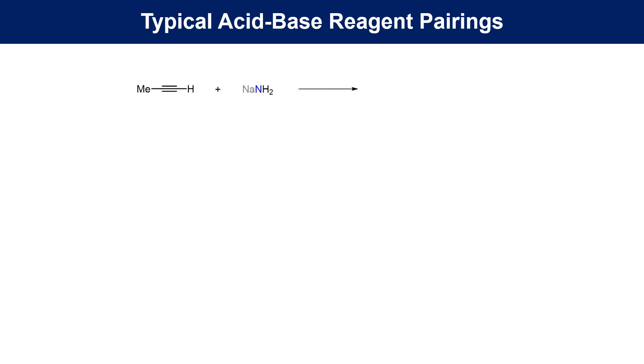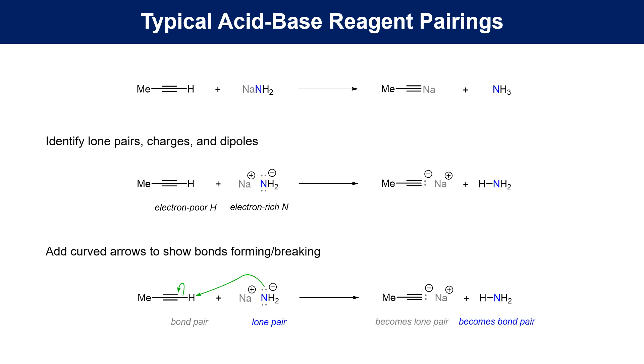In this third example, a terminal alkyne is treated with sodium amide. The result is the sodium salt of the alkyne along with ammonia. The electron-rich center is readily identified as the anionic nitrogen atom, while the alkyne proton is known to be weakly acidic. The bond-forming arrow therefore begins at nitrogen and goes towards the alkyne proton, with the bond-breaking arrow showing the sp-hybrid carbon picking up the electrons from the C-H bond that breaks.